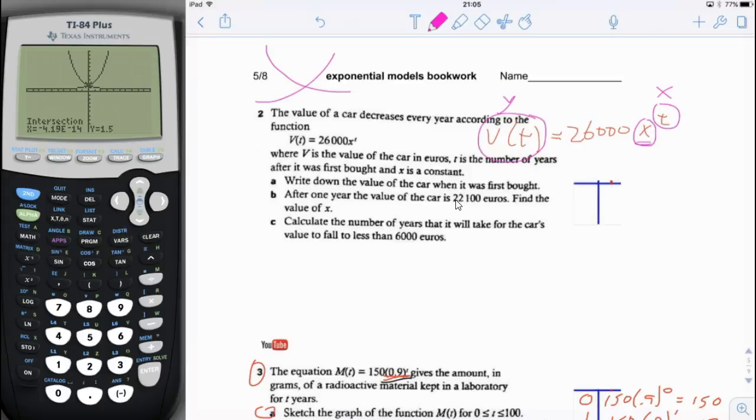Let's see what it is. V is the value of the car, t is the number of years after it was first bought, and x is a constant. So actually this is a number, the x is a number. They just didn't tell us what it is yet. Don't get scared, read on.